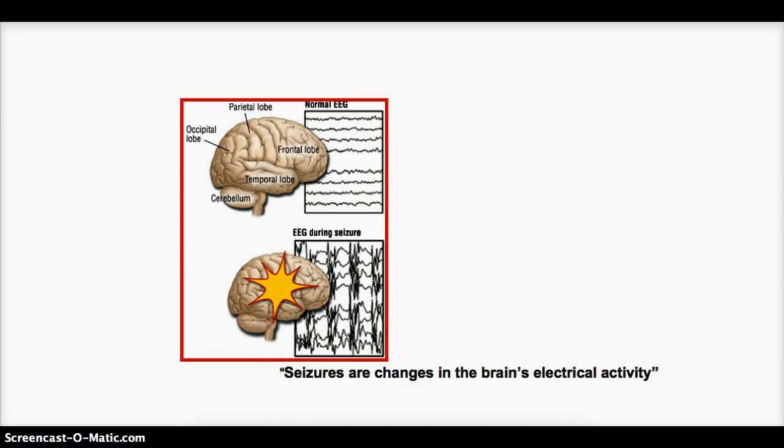Seizures are usually caused by abnormal brain's electrical activity. In this figure, we see that when there is a normal resting brain, there is no spike on the EEG, and then when the brain is seizing, there are a lot of spikes, and the EEG differs between the different types of seizures, which we will be discussing in this lecture.